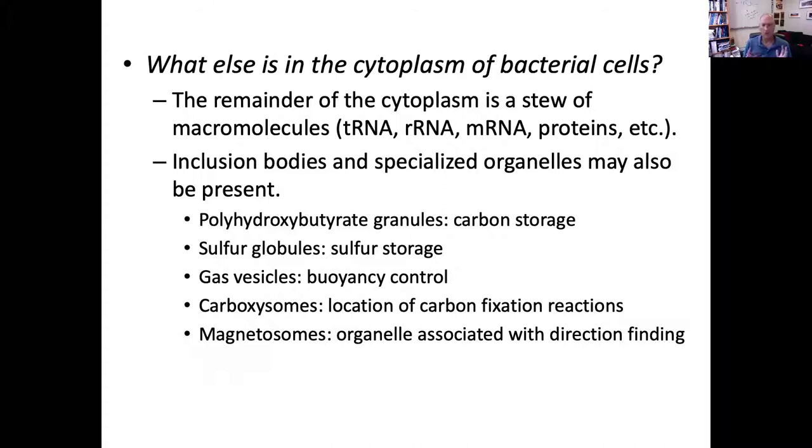It also has some specialized organelles, depending on how the bacteria are growing, like for carbon storage, sulfur storage, gas vesicles for cyanobacteria that want to be able to go up and down in the water column, carboxysomes for photosynthetic bacteria, and magnetosomes, which we're going to talk about some today.